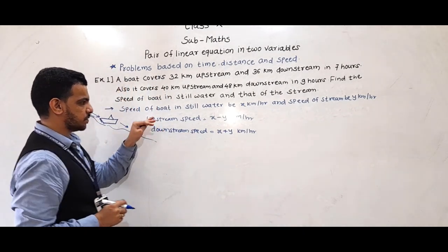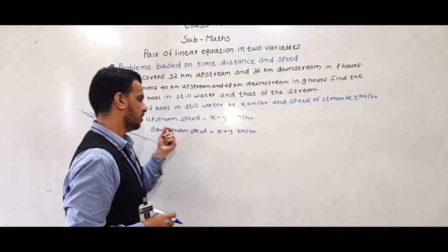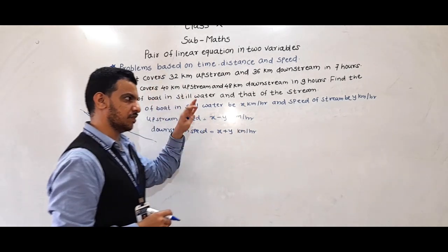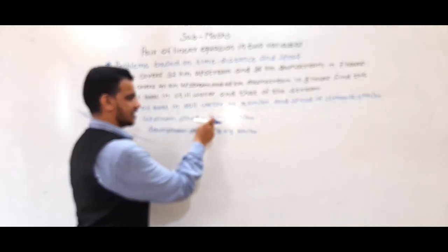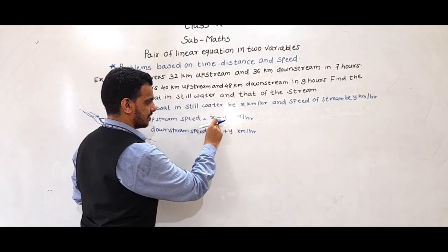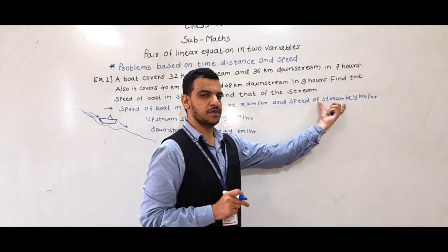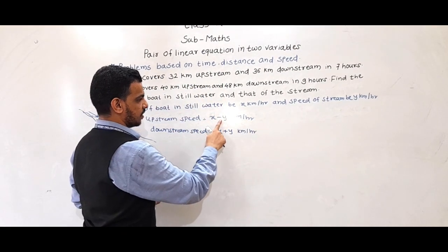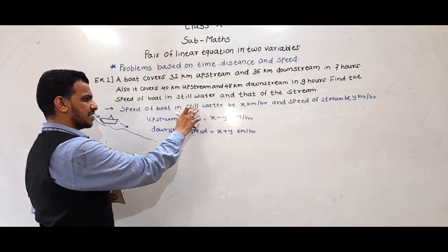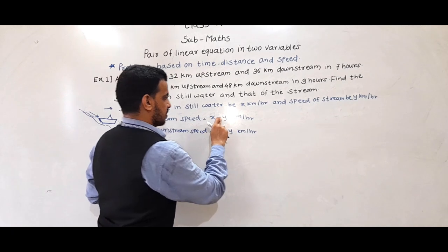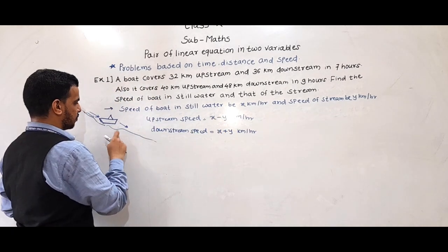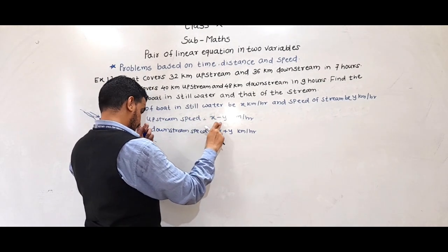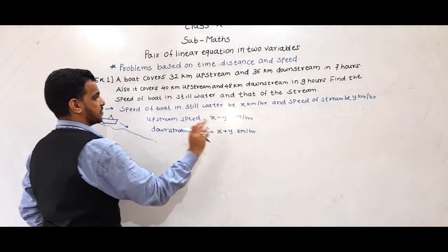So to keep in mind: upstream speed is x minus y km per hour, and downstream speed is x plus y km per hour. Always remember the minus sign is applied to the speed of the stream, because the stream opposes the boat going upstream. The speed of the boat in still water is always positive.